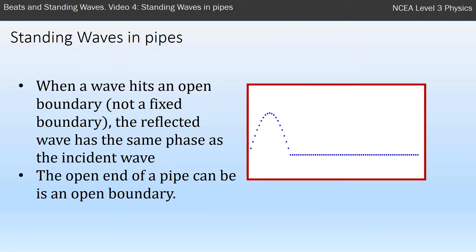A quick note first: when a wave hits an open boundary, this is different than a fixed boundary we had before, but when it hits an open boundary the reflection has the same phase, and the open end of a pipe can be thought of as an open boundary.